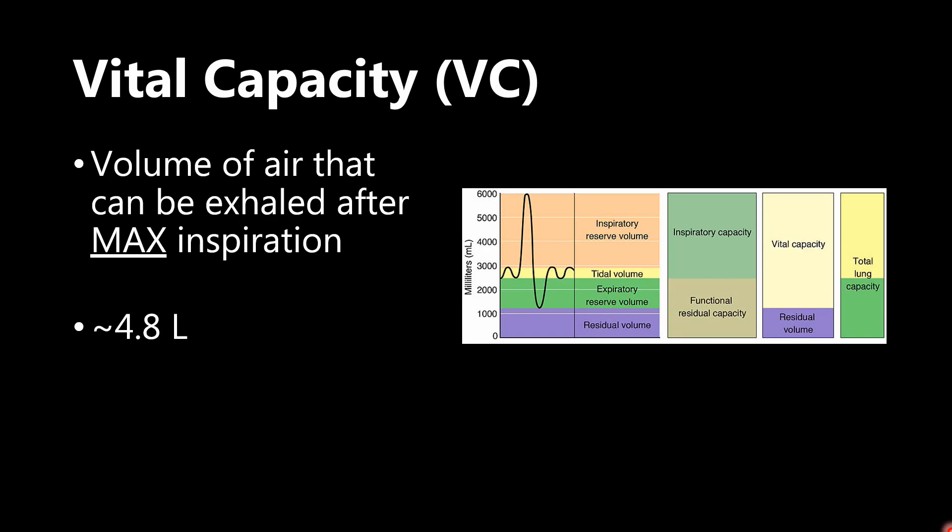And then the last value that we have here, vital capacity. This is the volume of air that can be exhaled after a max inspiration. So we have vital capacity right here. If you take your normal inspiration in and out, and then you take a full breath as much as you can fill your lungs, and then you exhale as much as you can all the way down here, that would give you your vital capacity. And that is about 4.8 liters.